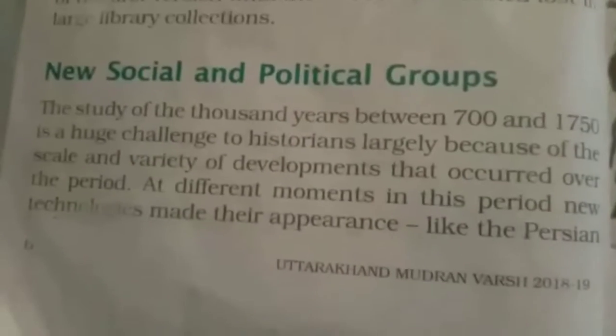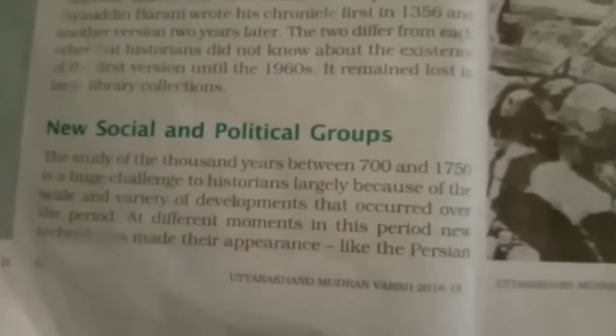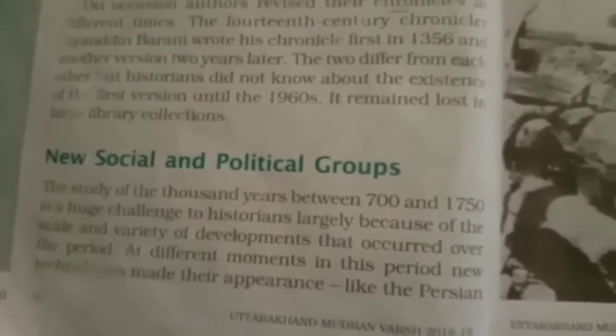Now we move to the paragraph on new social and political groups. The study of 1000 years between 700 and 1750 is a challenge to historians because of the variety of developments that occurred over this period. There were changes in technology, food and ideas from outside. New technologies included the Persian wheel for irrigation, the spinning wheel for weaving, and new kinds of foods and beverages like potatoes, corn, tea and coffee came to India.